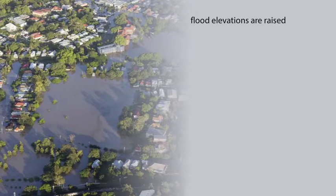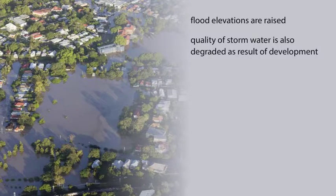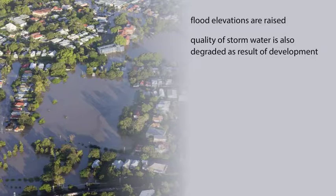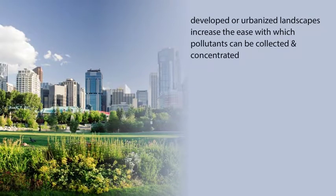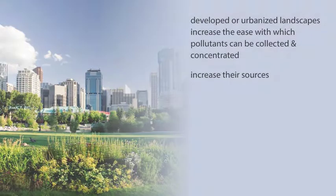This phenomenon increases the extent of the area at risk of flood damage. The quality of stormwater is also degraded as a result of development. Pollutants are accumulated on paved surfaces and are flushed from these surfaces during a rainstorm. Not only do developed or urbanized landscapes increase the ease with which pollutants can be collected and concentrated, but they also increase their sources.